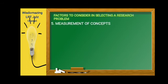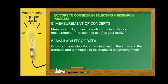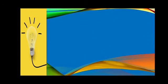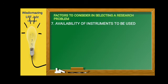Number five is the measurement of concepts. So make sure that you are clear about the indicators and measurement of concepts if used in your study. There is what we call clarity. It should not be ambiguous. Number six, availability of data as well.